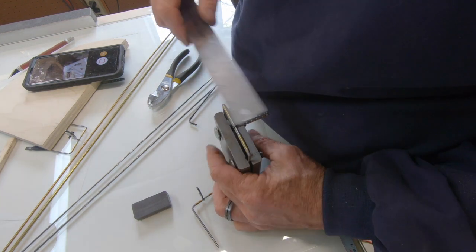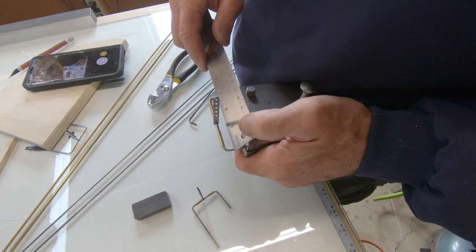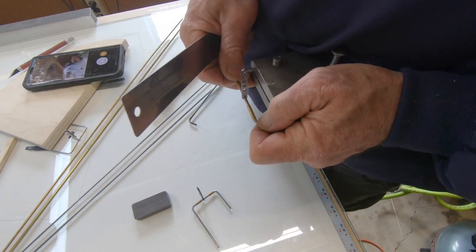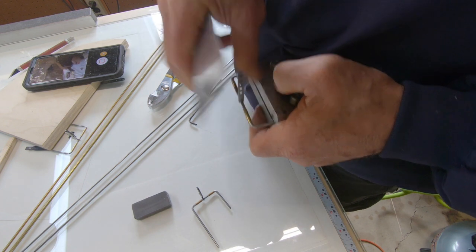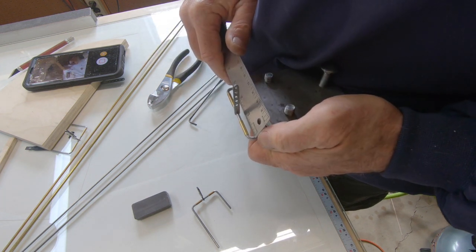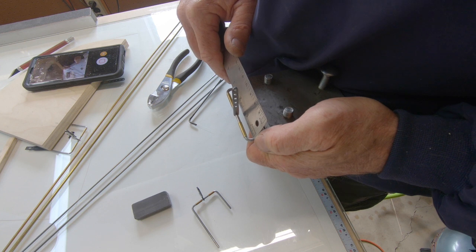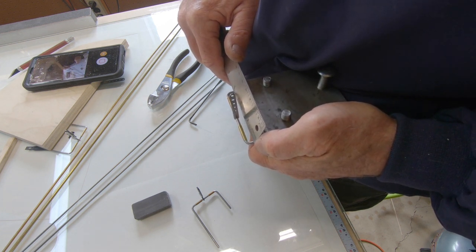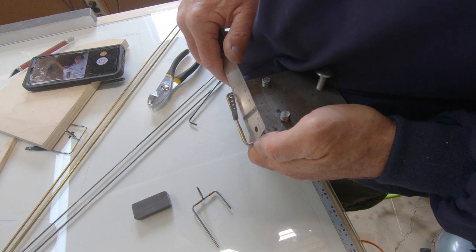Nice thing about it, if you want an offset tab, if you bend a horn and you bend it after it's braised, then sometimes it's hard to figure the offset, but by doing it this way, I can get it right where I want it.